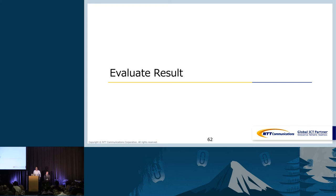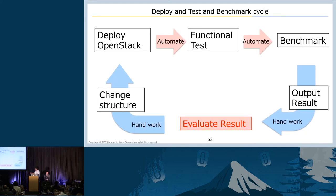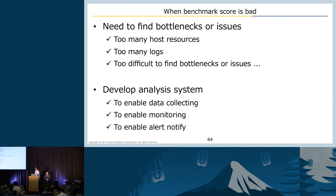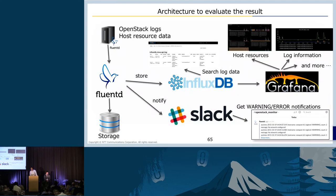Up to here, we have automated from deploying to benchmarking. In this section, I'll introduce our way of identifying bottlenecks and the root cause of failures. When a benchmark score is unusual, we need to find bottlenecks or issues. But an OpenStack cloud consists of many components and outputs many different logs, which makes it difficult to find bottlenecks and issues. So we created an analyzing system to enable data collection and monitoring. This system architecture uses three open-source tools and one free service to search, notify, and visualize logs and resources: Fluentd, InfluxDB, Grafana, and Slack.